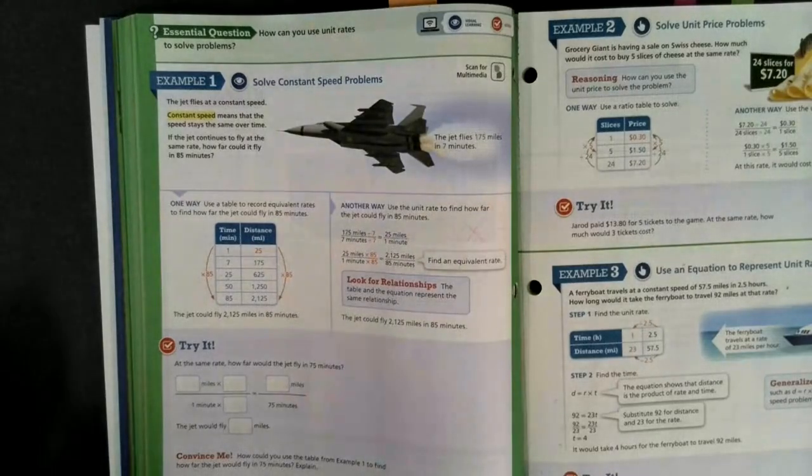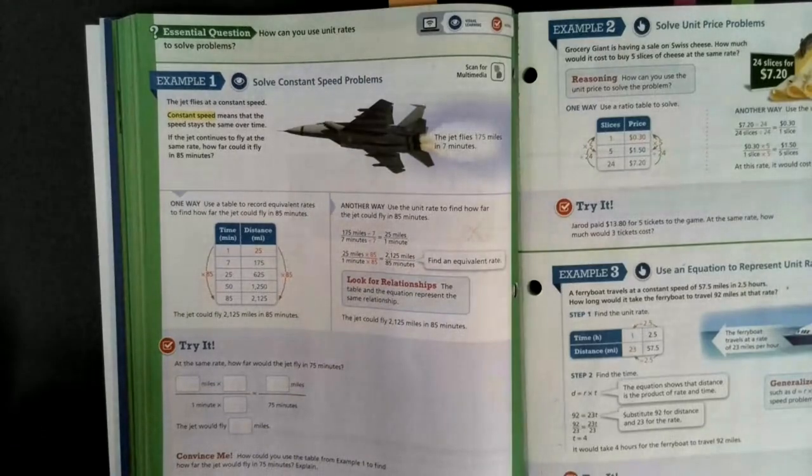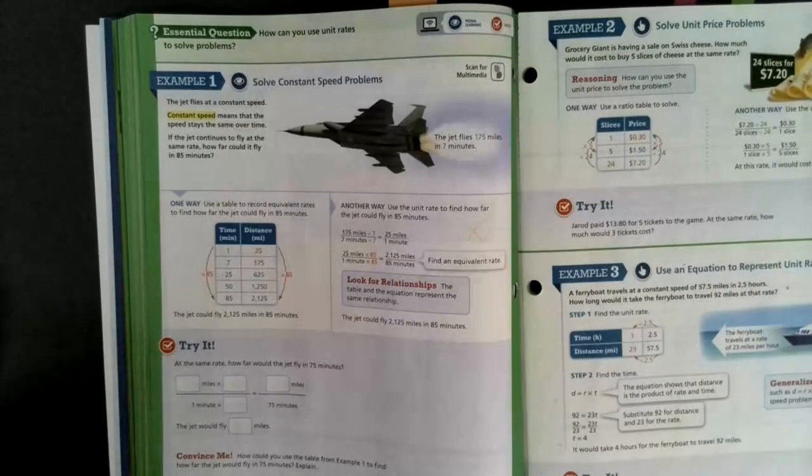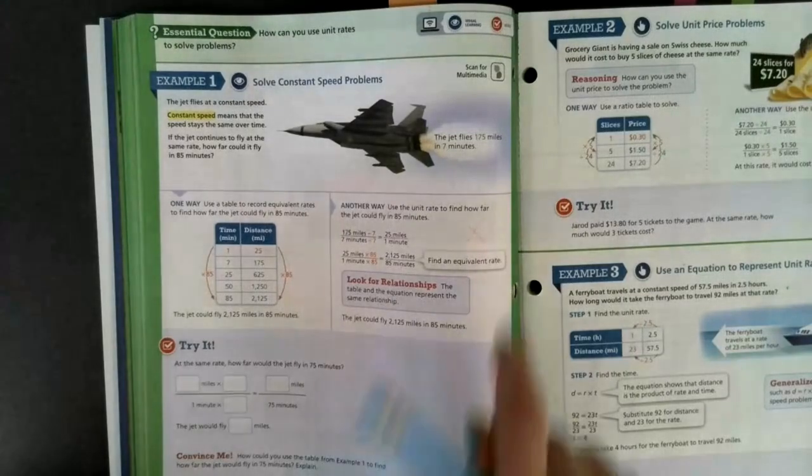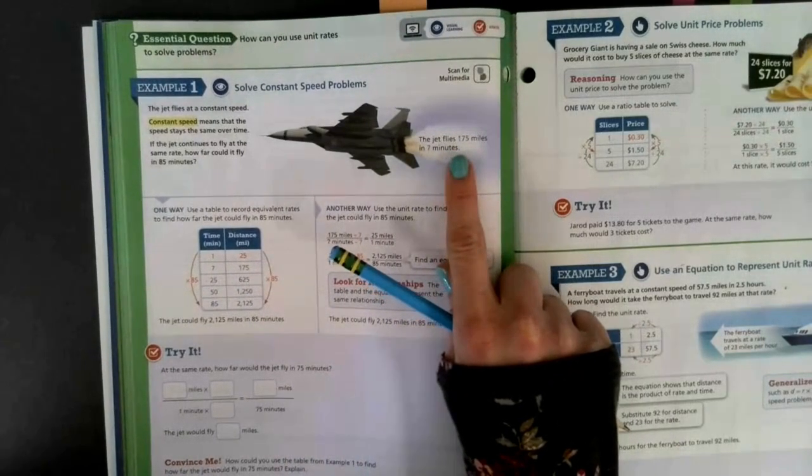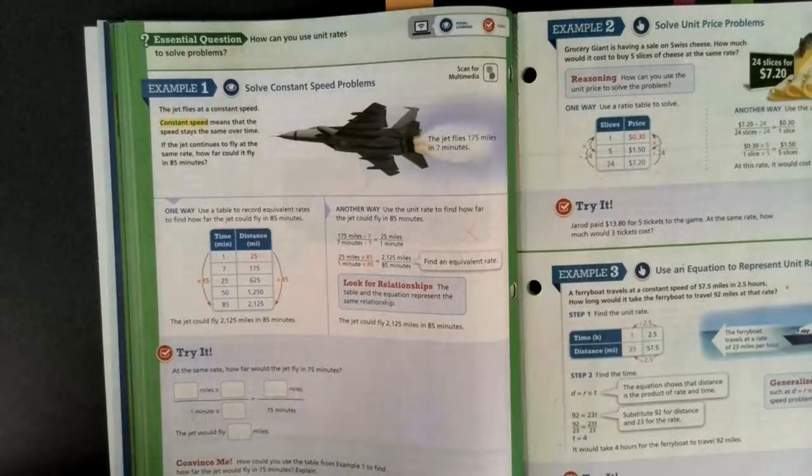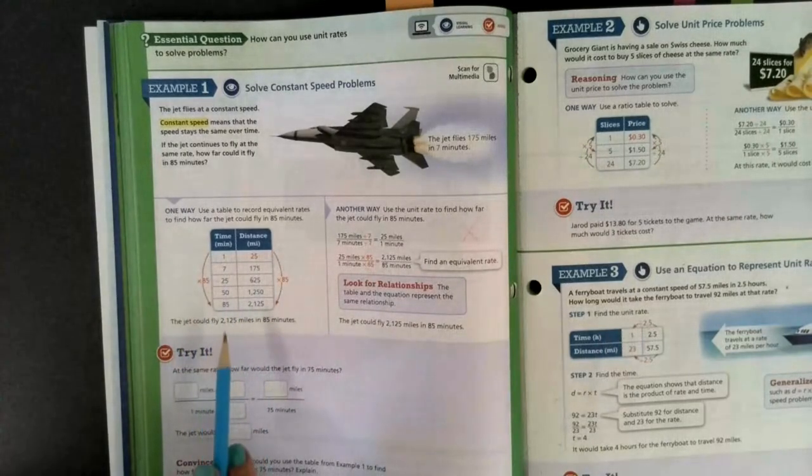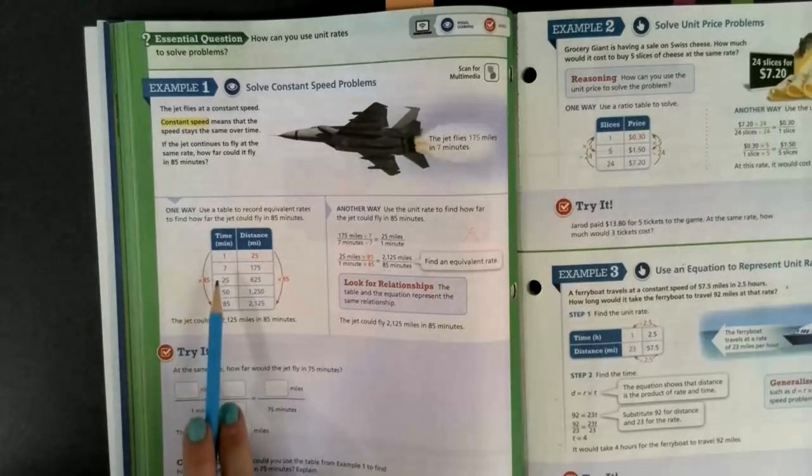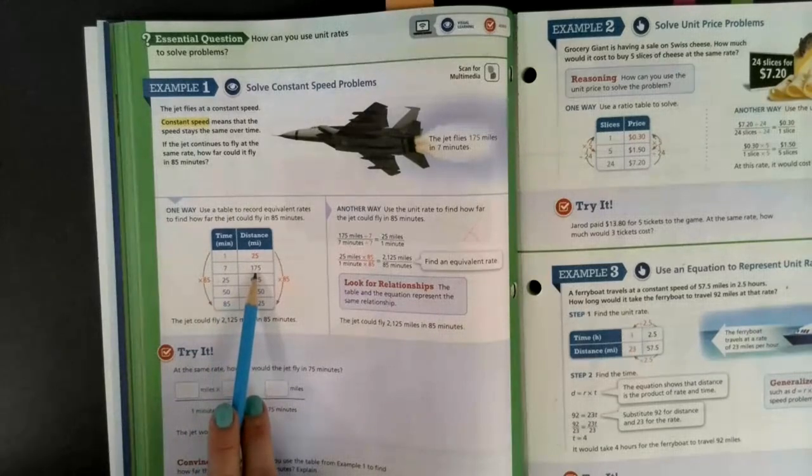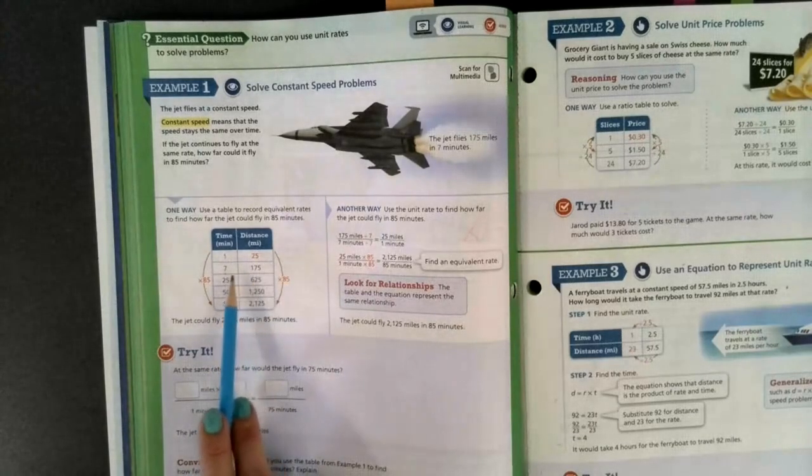Let's take a look at example number one. The jet flies at a constant speed. Constant speed means that the speed stays the same over time. If the jet continues to fly at the same rate, how far could it fly in 85 minutes? We have to use what we know. We know the jet flies 175 miles in seven minutes. So one way we can use unit rates to solve is with a chart. So if I fill in what I know, I know it can go seven minutes, it can go 175 miles. So 175 miles in seven minutes.